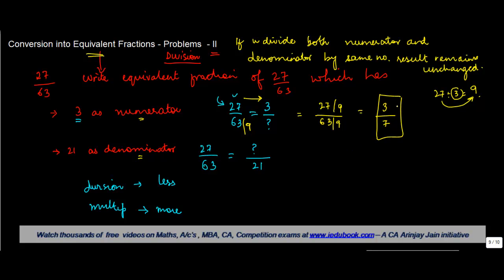To get an equivalent fraction with a given numerator when the numerator is reducing, that means this number is divided by a particular number. You first find out what number is used to divide, then divide the denominator also by the same number.